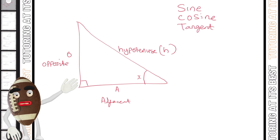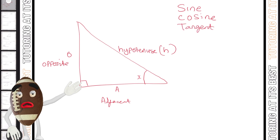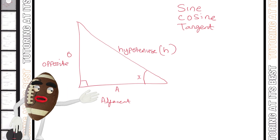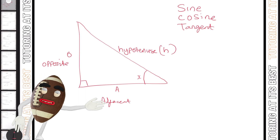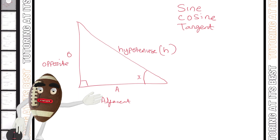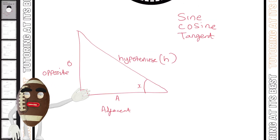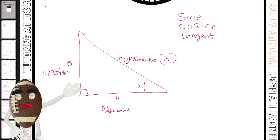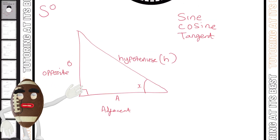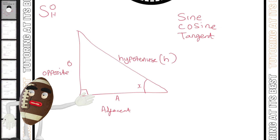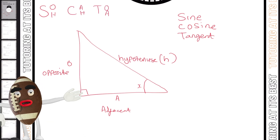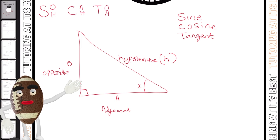So how are these calculated? They're calculated by finding the ratio of two sides of a right-angled triangle. You may have heard of the term SOH, CAH, and TOA — and that's a useful way to remember this.